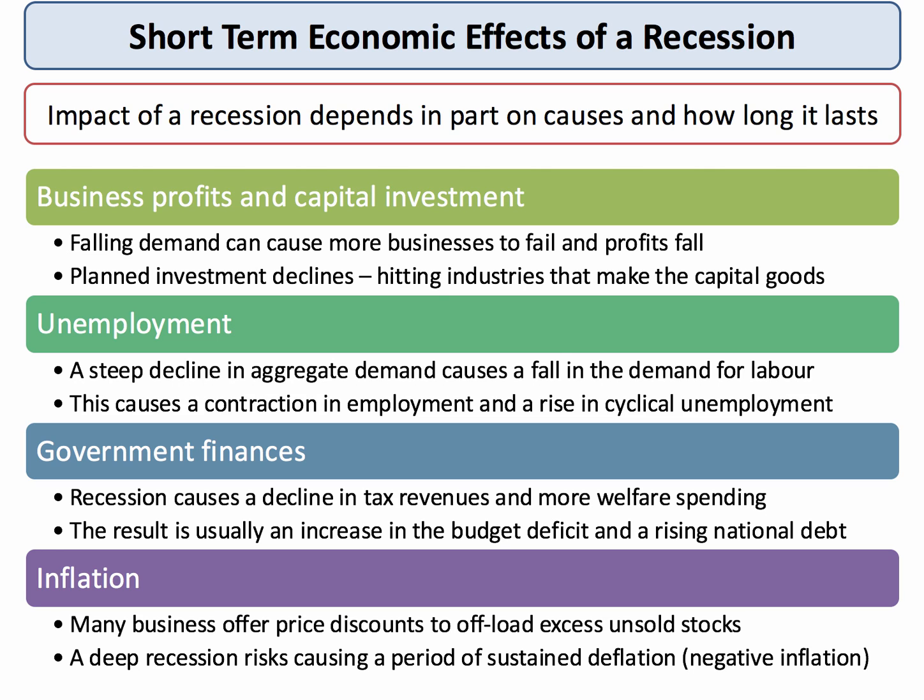If businesses are cutting back on investment, that will lead to a fall in demand for the industries that make capital goods — the machinery and equipment to build new factories. The second key effect of recession is unemployment. If there's a fall in aggregate demand, the demand for labour is derived from the demand for goods and services. We therefore expect to see a contraction in employment and a rise in cyclical unemployment, or Keynesian unemployment.